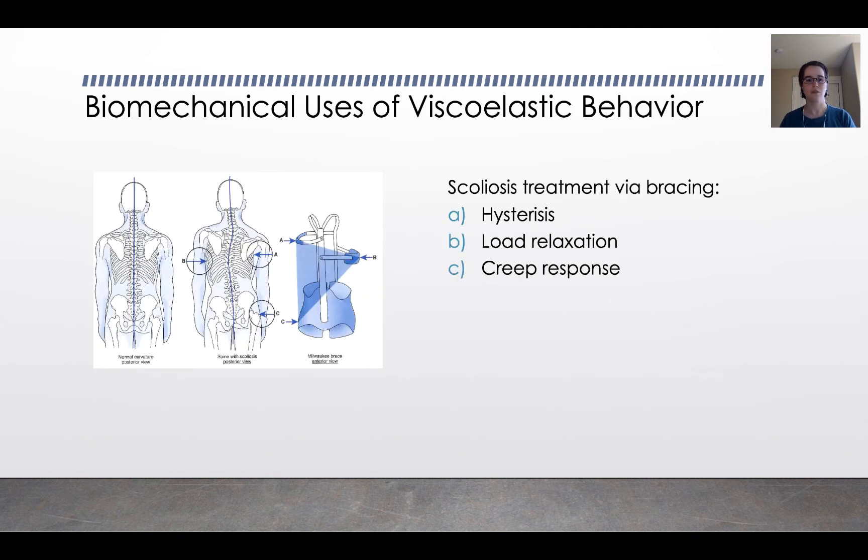Or scoliosis treatment. If someone has bad scoliosis, a curved spine, one of the treatments that they will do before they go to the level of inserting a rod in the spine is to use bracing, where the subject wears bracing for a significant fraction of the day, maybe as many as 20 hours a day. The idea is that you're applying pressure to the body in the places shown there. So is this an example of hysteresis, load relaxation, or creep response? You said creep response? You're right. You're applying a constant load, and you're having a deformation in response to it.